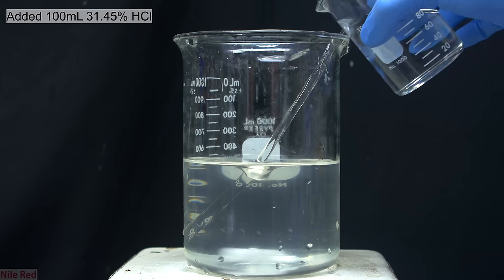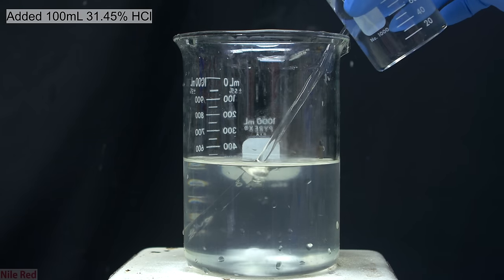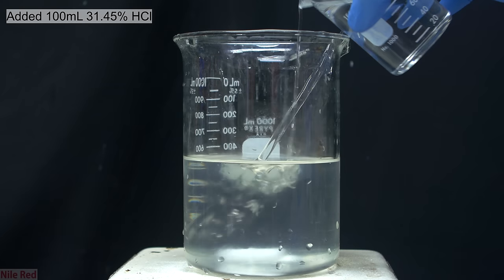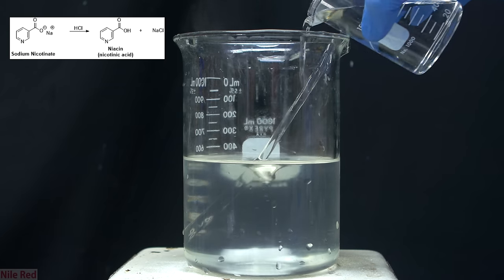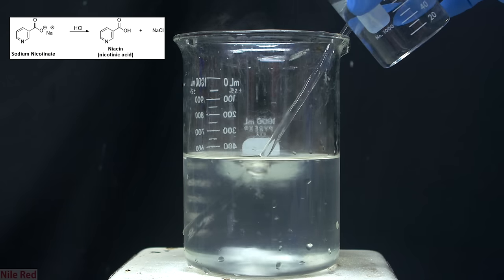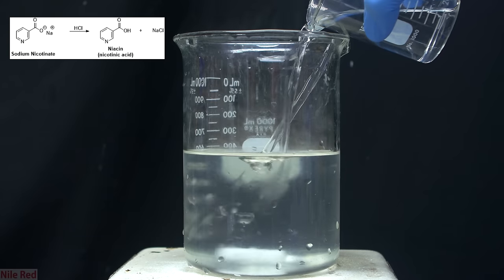To do this, I used about 100 milliliters of 31.45% hydrochloric acid. By using an acid, we're regenerating the niacin from its salt form, but we have to be careful that we don't add too much acid.